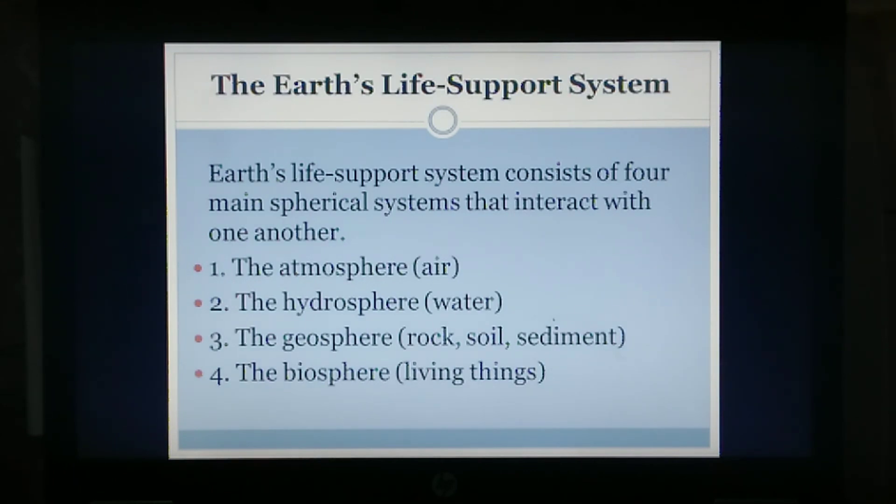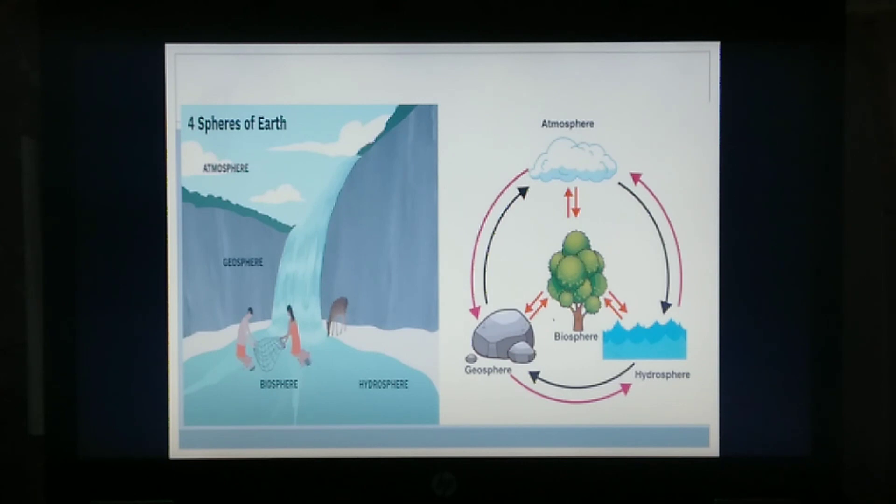Earth's life support system consists of four main spherical systems that interact with one another: the atmosphere, the hydrosphere, the geosphere, and the biosphere.